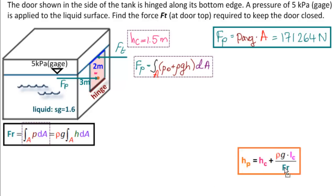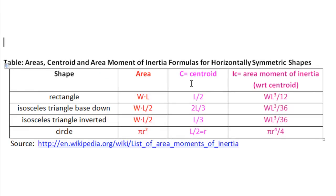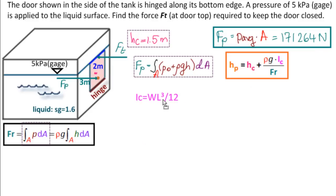Now we're going to calculate the center of pressure, Hp, using our formula. We have Hc, 1.5 meters. We have FR is 171,264 newtons. Rho G we know how to find from SG. And so we need Ic, and that's from a table. Here's our table of area centroids and area moments of inertia. And we need this one, WL cubed over 12. So Ic equals WL cubed over 12.